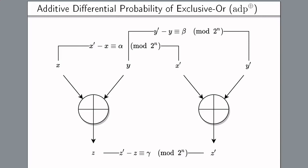Here we're not looking at XOR differences but at additive differences. XOR differences go through a rotation or XOR operation with probability one, but not necessarily through an addition. With additive differences it's the other way around: probability is one for differences going through the addition operation, but going through an XOR operation or rotation is not necessarily probability one. This approach can be handy to analyze ciphers with many chained additions or additions involving the key.